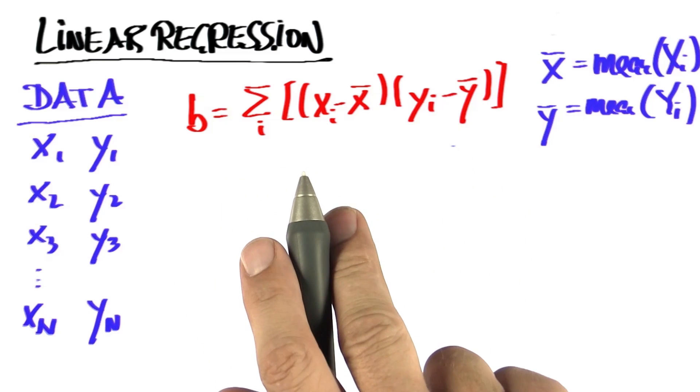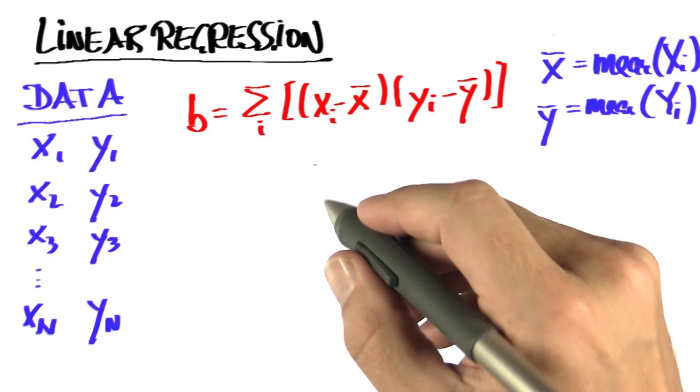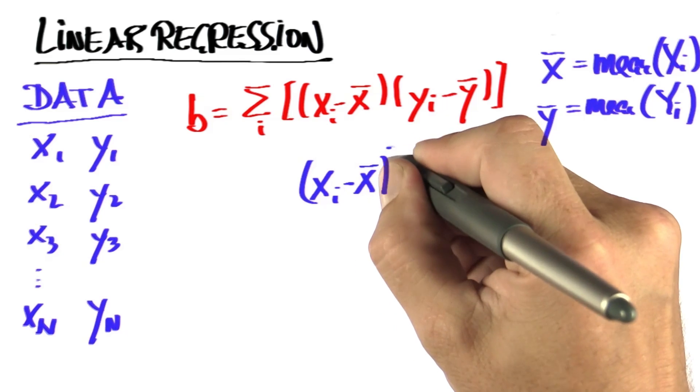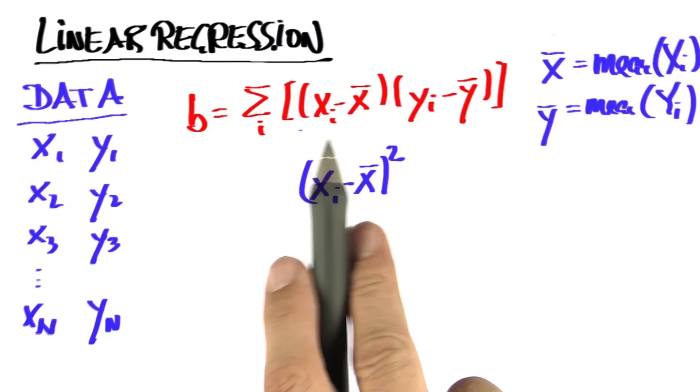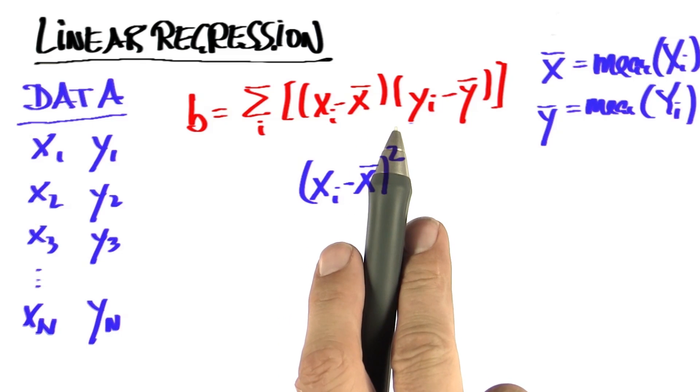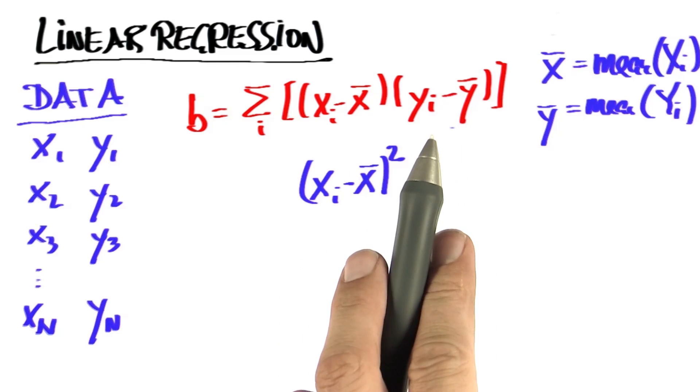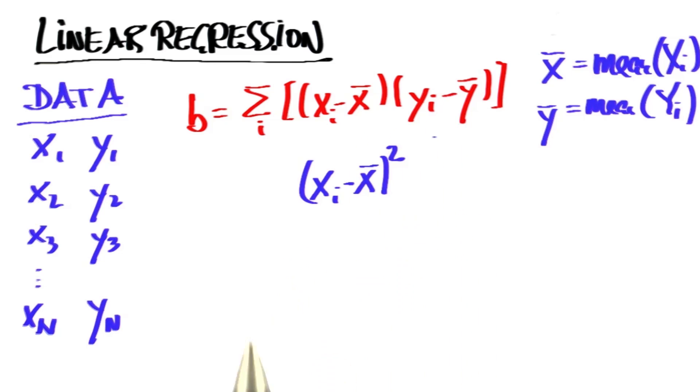Let's go back and look at this formula here. When we computed the variance, you would have taken xi minus x bar with a square, but here we're taking the product of xi minus x bar multiplied with the y direction of the same thing.